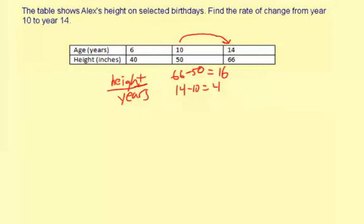So the change in height was 16 and it was actually inches. Let's put that there. And the change in years is 4 years. So we need to divide the change in height by the change in years to get our final rate of change.